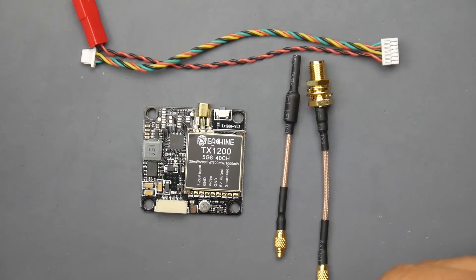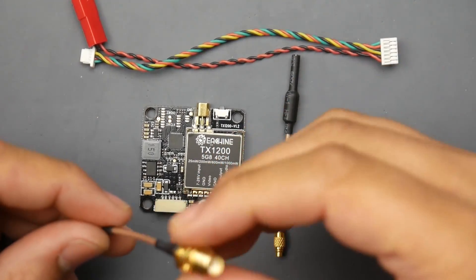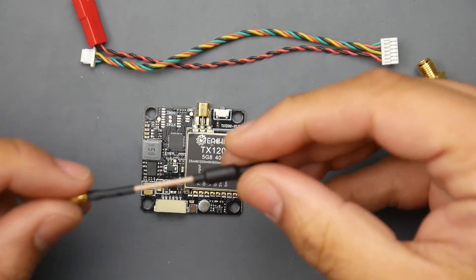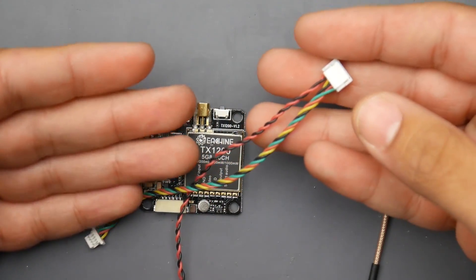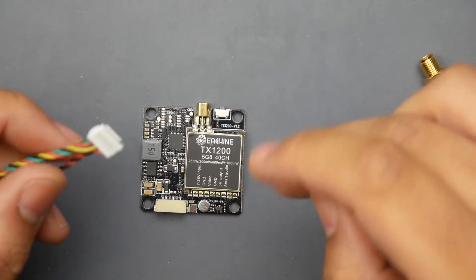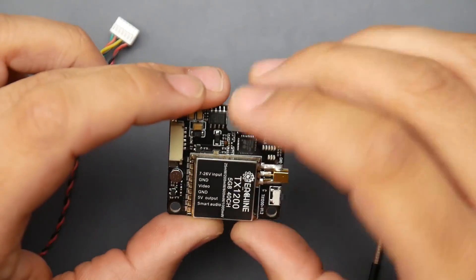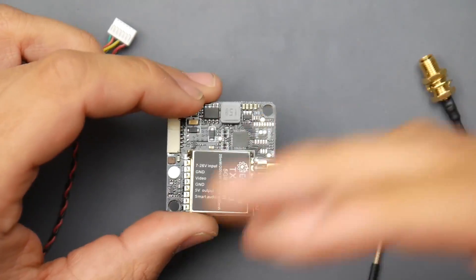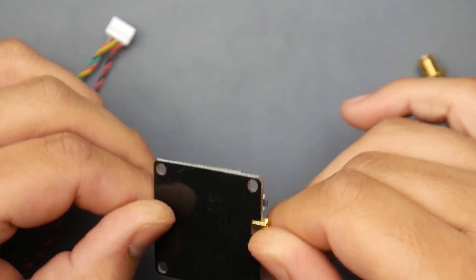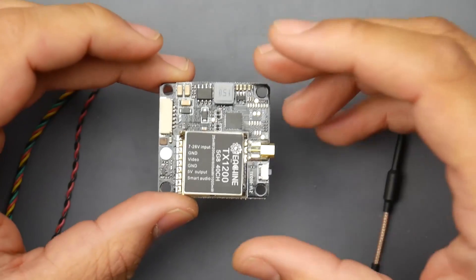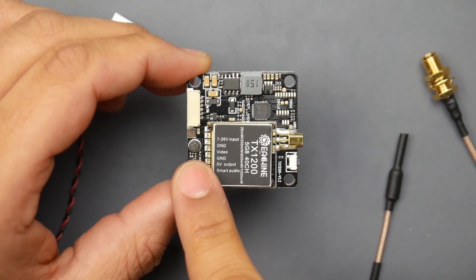Some of the things it comes with: they provide you with MMCX to SMA, also MMCX to dipole antenna, and a pre-made wire here which is really nice. This thing does support Smart Audio and has a 5 volt output for your camera, as well as 7 to 26 volt input, so you'll be totally fine giving it battery input. Filtration looks minimal, so keep that in mind. It's always recommended to add a low ESR capacitor to your quadcopter. And it does have a microphone as you can tell right there.